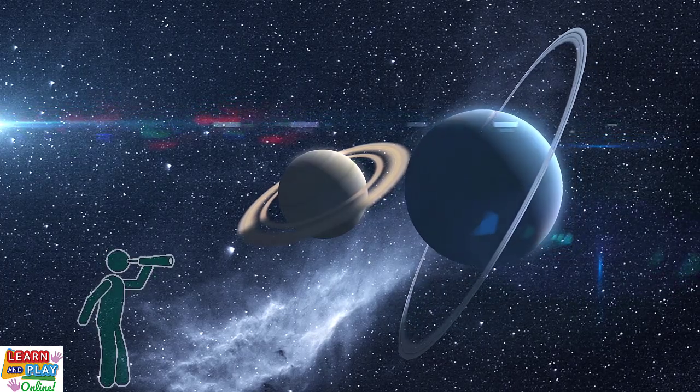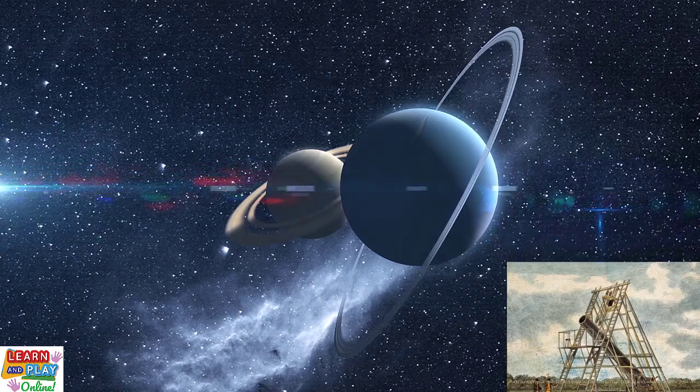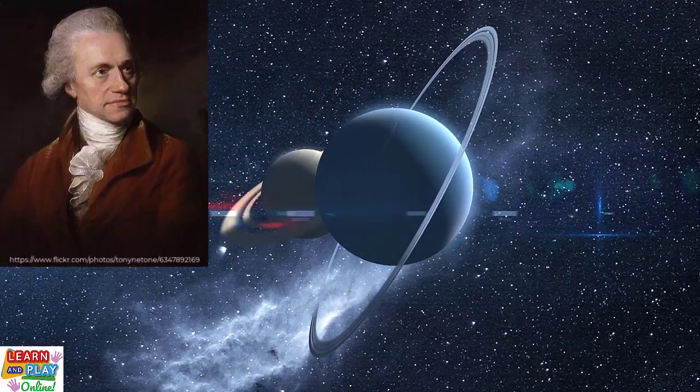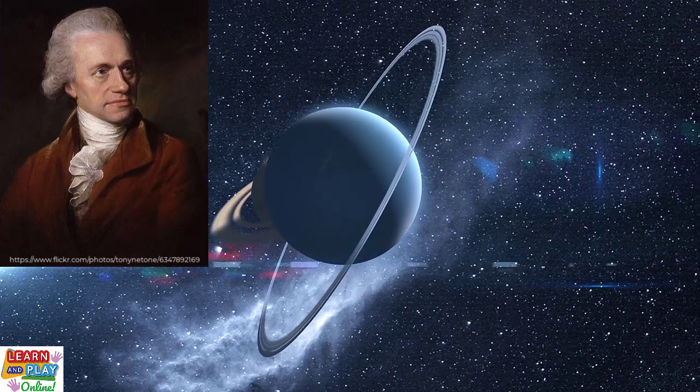Uranus was indeed the first planet to be discovered using a homemade telescope by an astronomer named Sir William Herschel in 1781. He originally believed the planet was either a comet or a star.